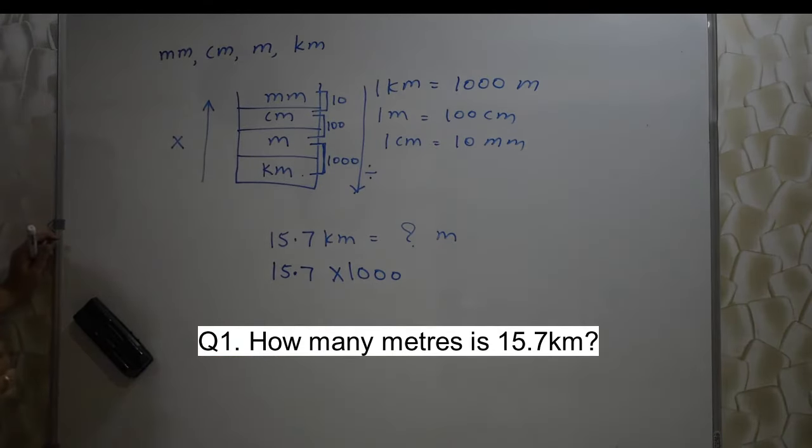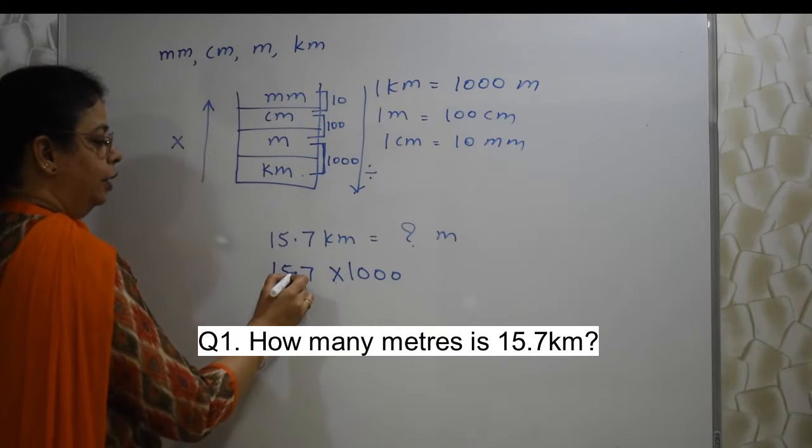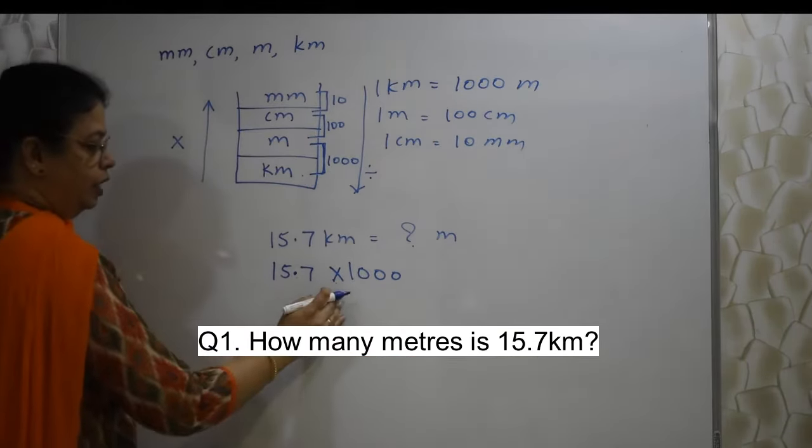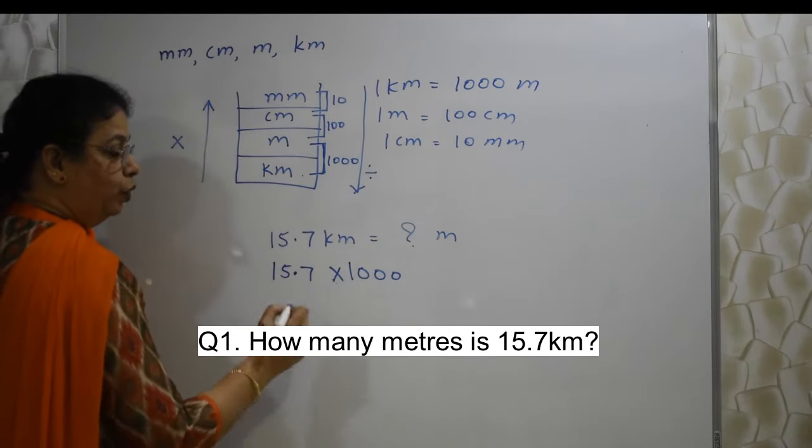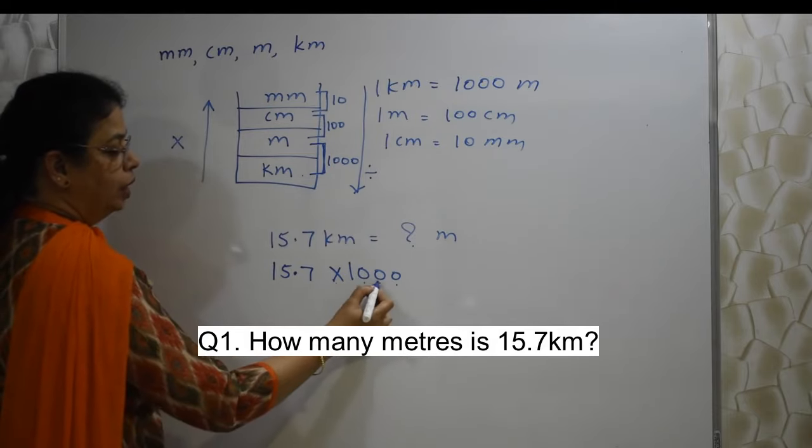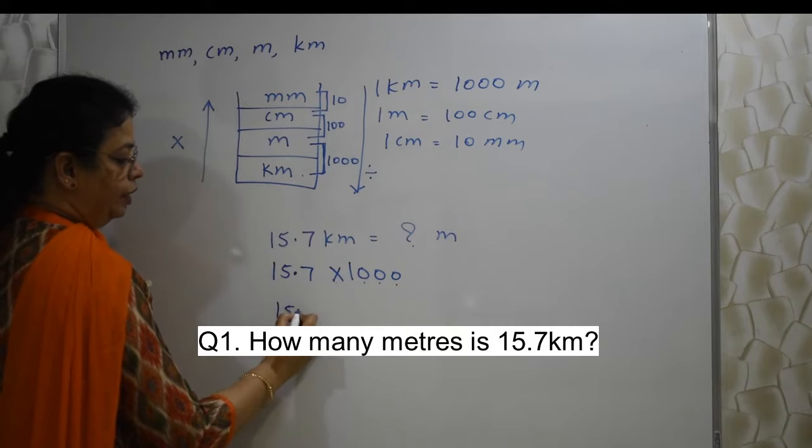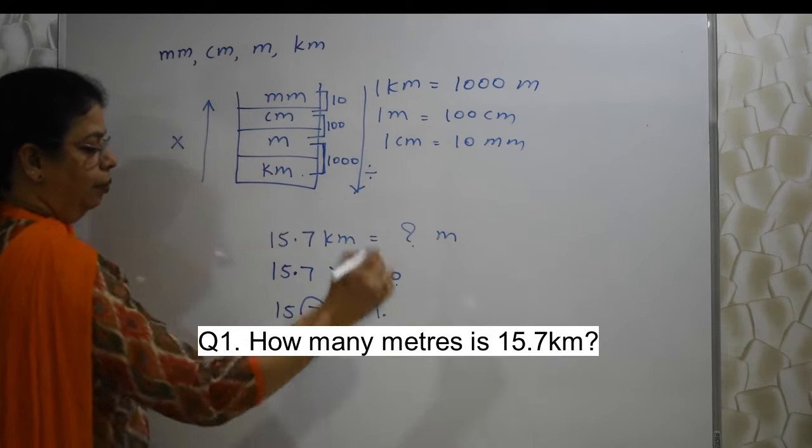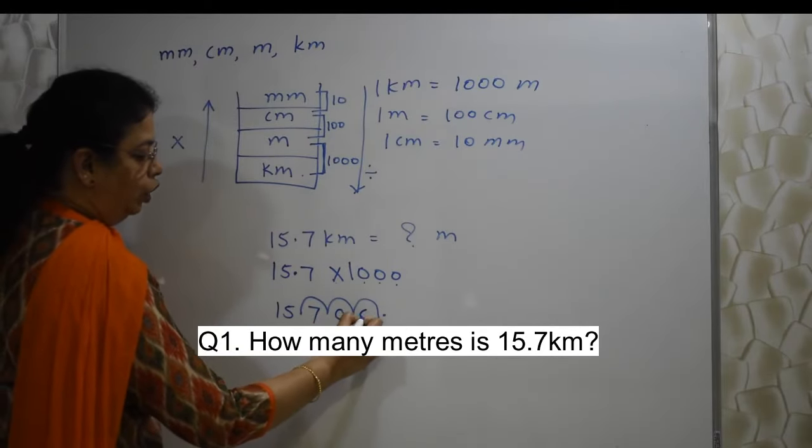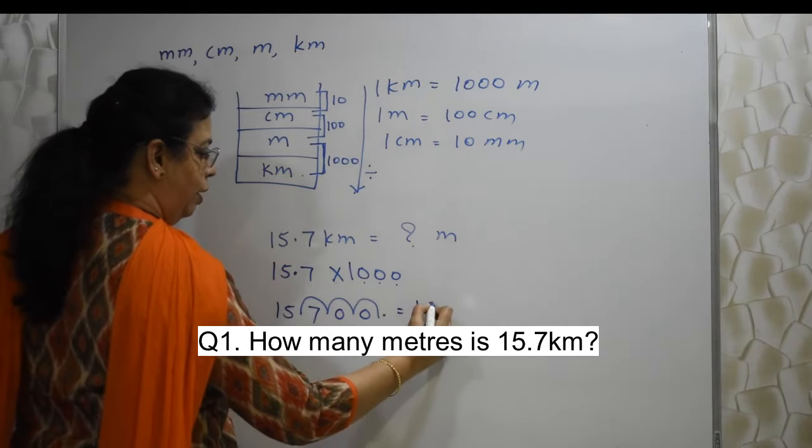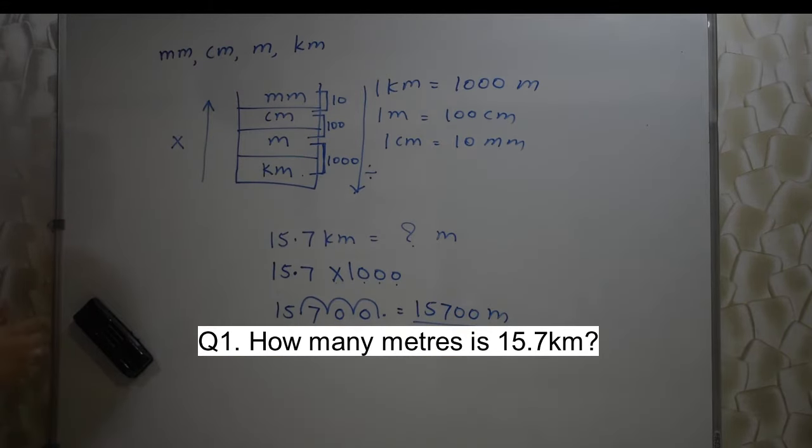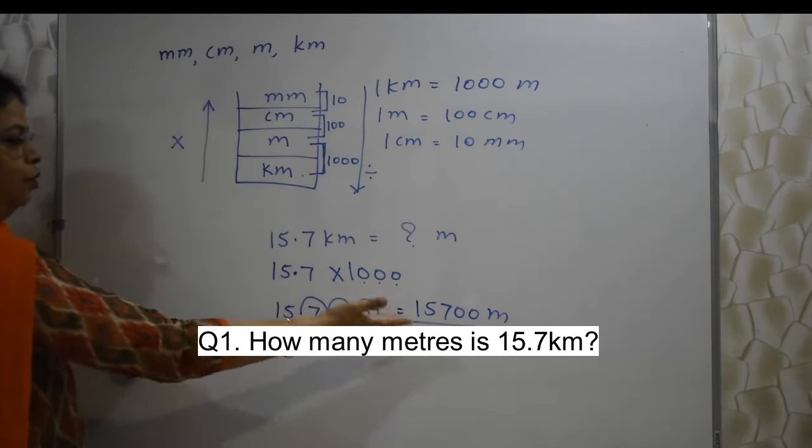Remember student, this decimal. Whenever we multiply by 1000, 100 or whatever, whenever we multiply, the decimal moves towards the right. And when we divide, it moves towards the left. Here in this case, we are multiplying. How many places it will move to the right will depend on these zeros. How many zeros are there? 3. So 15.7, this point will jump 3 times: 1, 2, 3, and then it will come here. Now these remaining places I need to fill with zeros. So what is the answer? 15,700 meters. This is the answer. See, how easy it is. Just jumping of the decimal 3 places. Your answer is ready.